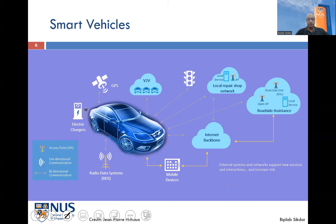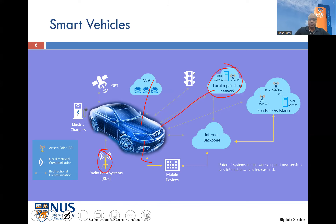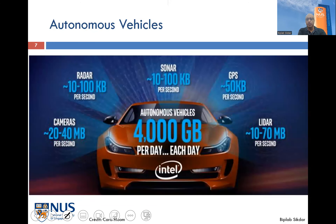Vehicles have a number of different sensors and network connectivity. They may talk to roadside units, other vehicles, and when they go to a repair shop they may access the network there. Other mobile devices in the vehicle may also be connected, giving access to the Internet backbone. Regular vehicles generate a lot of data, and in the era of autonomous vehicles we expect each vehicle to generate on the order of thousands of gigabytes per day.